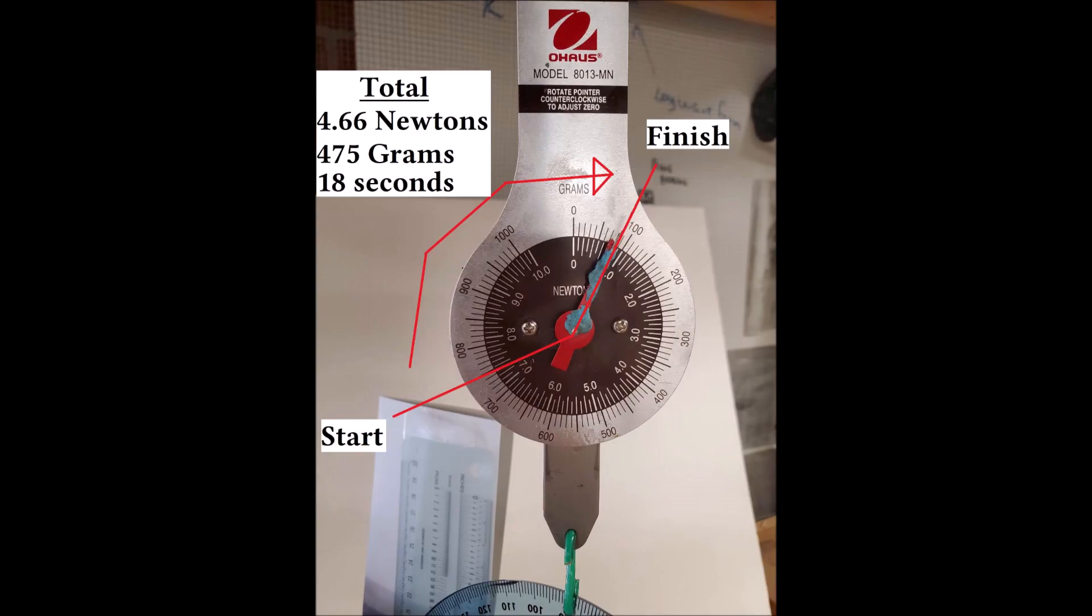This picture shows where we started and where we finished and the total amount of newtons that were produced: 4.66. 475 grams were shown displaced on the scale. This was over 18 seconds at 1500 watts.